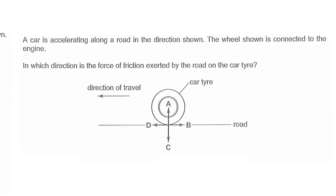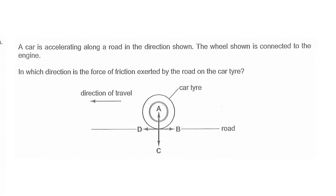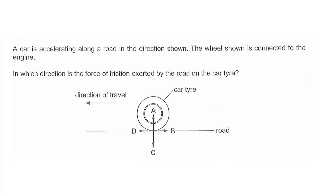The next question is very similar. The car is accelerating to the left and the wheel is once again connected to the engine, so it rotates anti-clockwise and the friction — the forward thrust — is to the left. The answer is also D. These two questions are essentially identical.